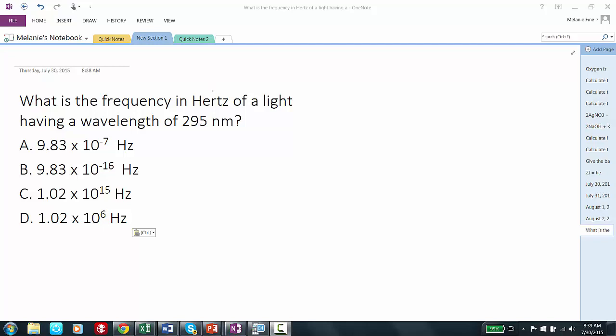Hertz is the same thing as 1 over seconds. We have a wavelength of 295 nanometers, which we need to convert to meters. Nano is 10 to the negative 9, so 295 nanometers equals 295 times 10 to the negative 9 meters.